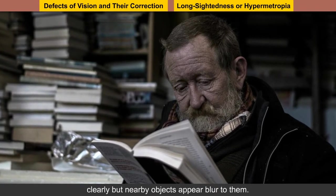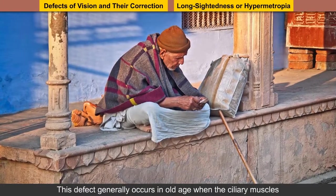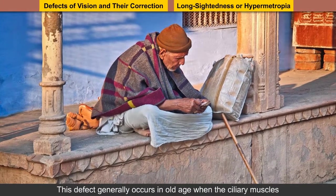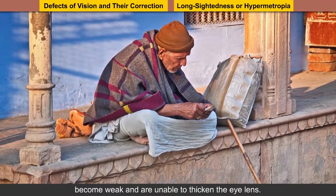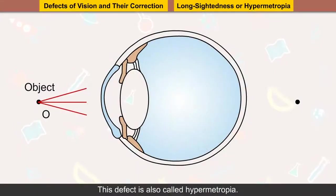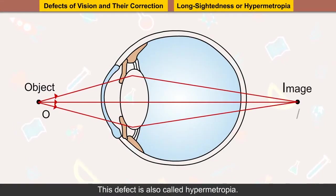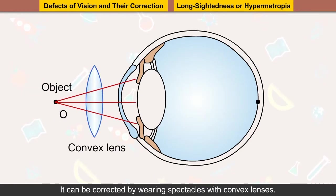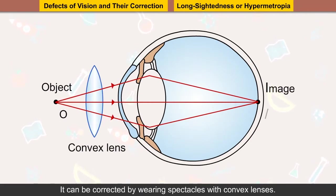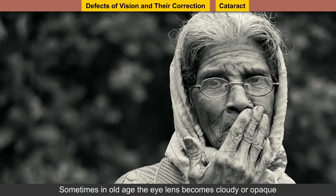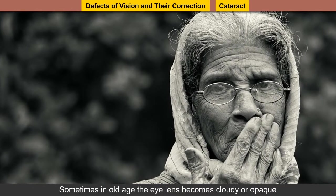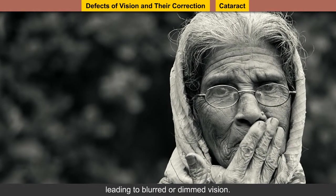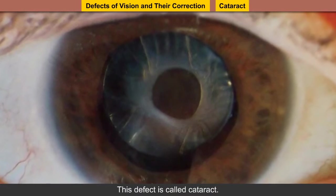This defect generally occurs in old age when the ciliary muscles become weak and are unable to thicken the eye lens. This defect is also called hypermetropia and can be corrected by wearing spectacles with convex lenses. Cataract: sometimes in old age the eye lens becomes cloudy or opaque, leading to blurred or dimmed vision.